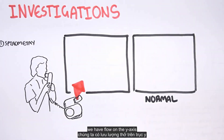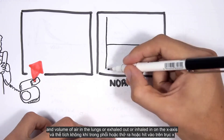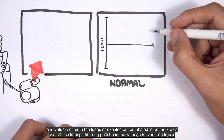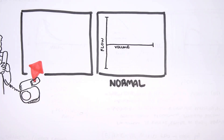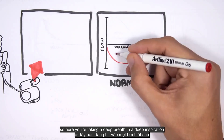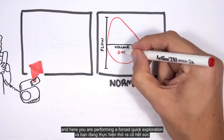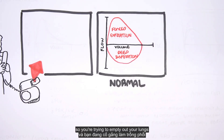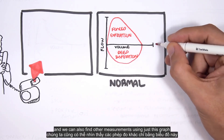The spirometry can give you a graph. We have flow on the y-axis and volume — the volume of air in the lungs, exhaled out or inhaled in — on the x-axis. Here you're taking a deep breath in, a deep inspiration, and here you are performing a forced quick expiration, and you do it for about six seconds, so you're trying to empty out your lungs.